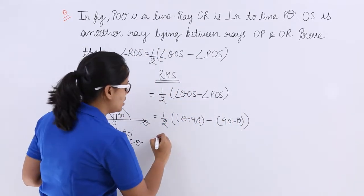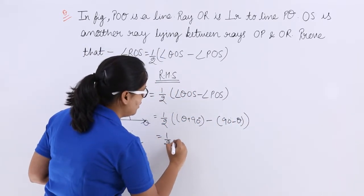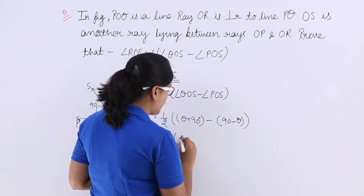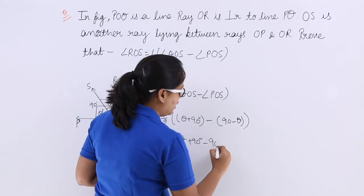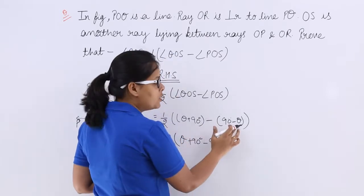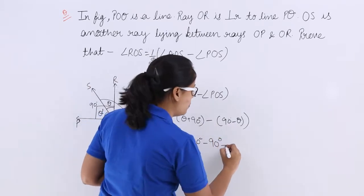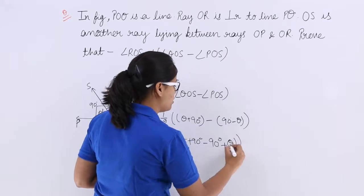What you will get? Open this bracket: theta plus 90 degree minus 90 degree, and this minus sign will change the sign of theta and this will become plus theta.